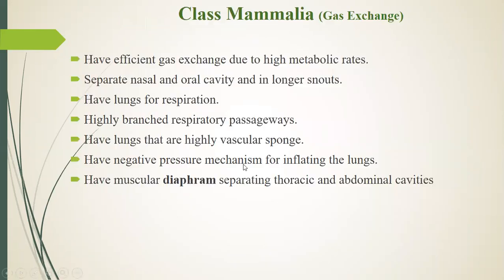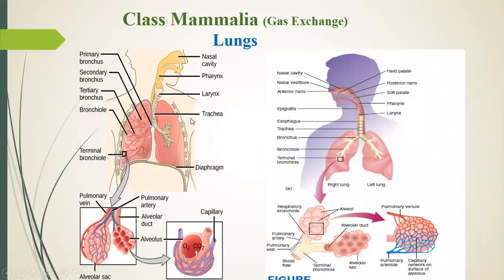Mammals have a negative pressure mechanism for inflating the lungs — to expand them and allow air in. This mechanism is present. They also have a muscular diaphragm separating the thoracic and abdominal cavities. The diaphragm is muscular, meaning it has the ability to contract and relax. You can see here, this is the diaphragm.